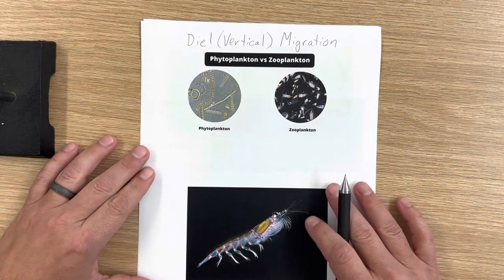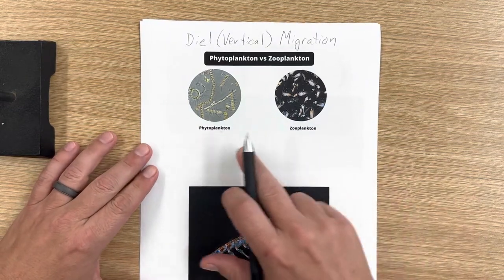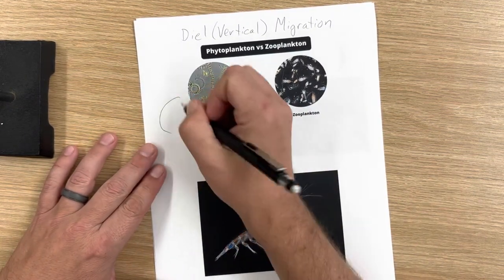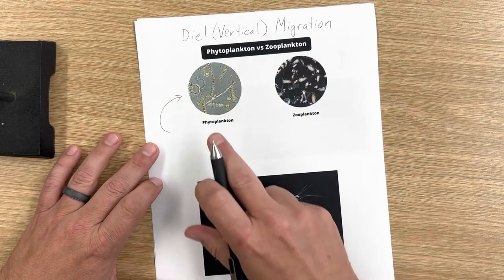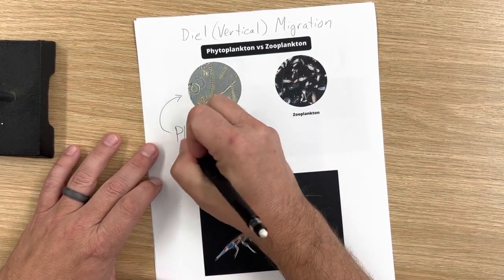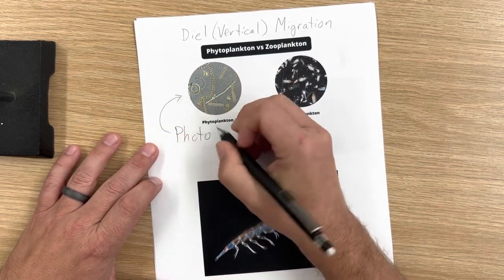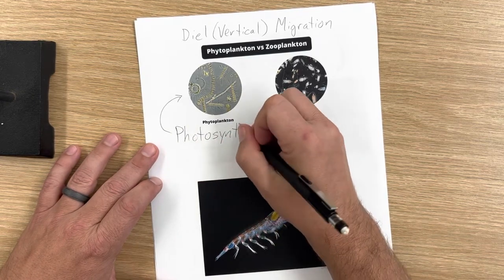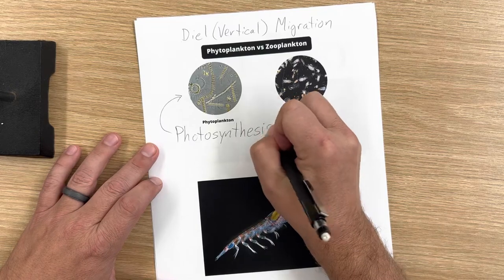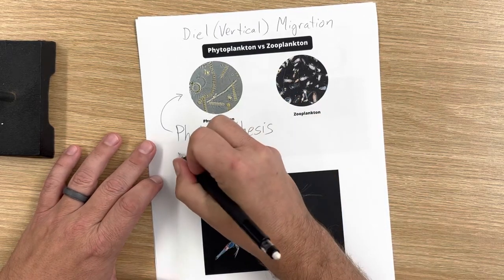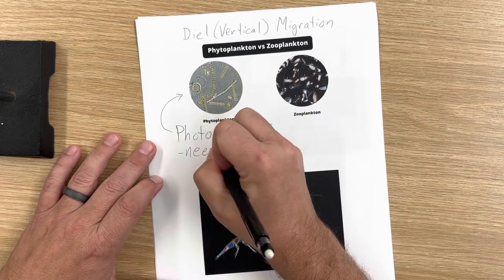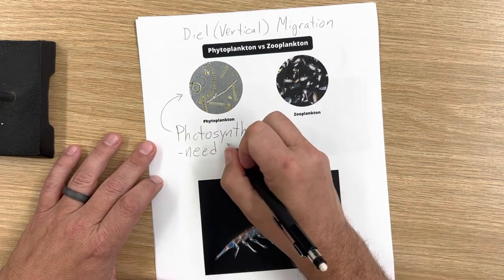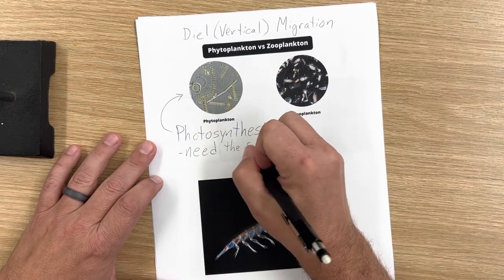Now the difference between these two: phytoplankton are like little plants, and they go through photosynthesis. So if they go through photosynthesis, that means they need the sun.